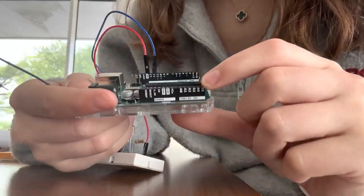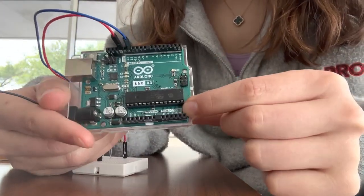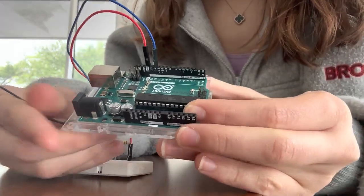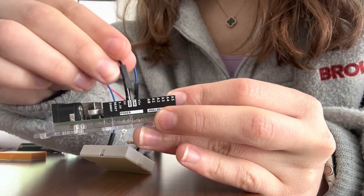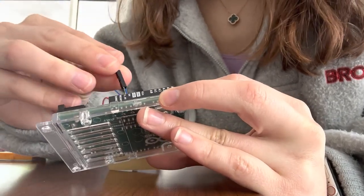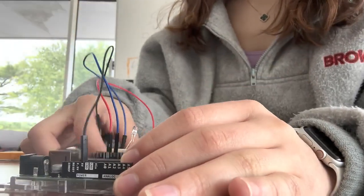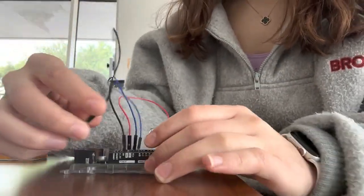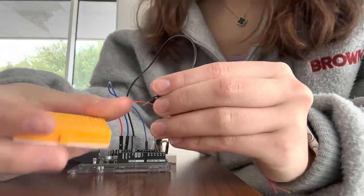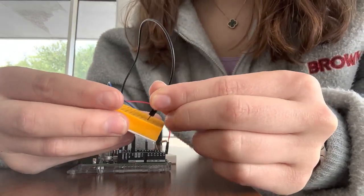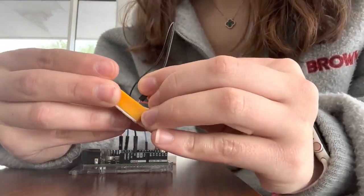So as you see here, there's a digital side and a power and analog side here. You want to find your five volt on the power side. It says power there as well. Five volts. You can use 3.5 volt, but we're going to use five volts for this. Then connect the other end to anywhere on your other breadboard.